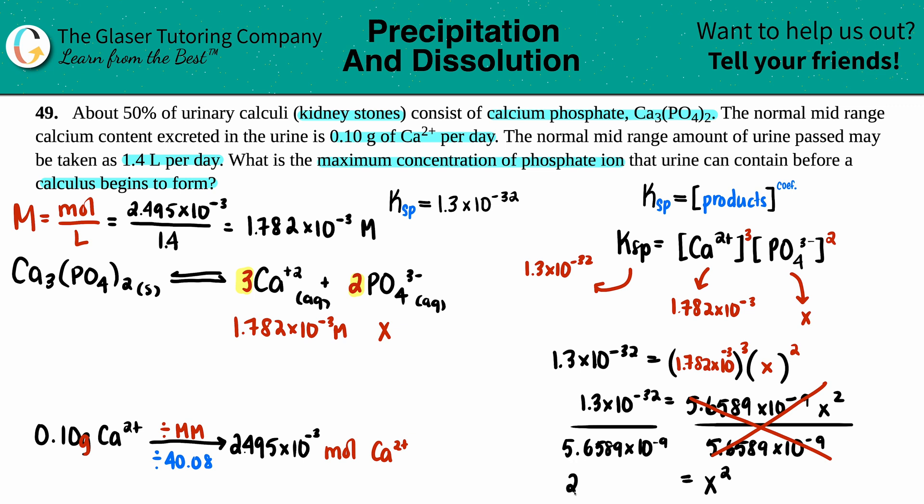However, we just want to solve for X. So it's X squared, so I am going to just take the square root on both sides. Square root 2.297 times 10 to the negative 24th.